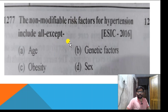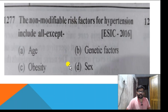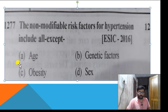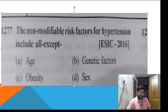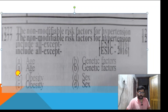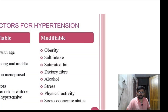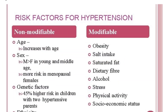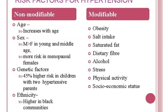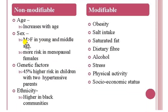Second question: the non-modifiable risk factors for hypertension — which is the odd one out? Options: age, genetic factors, obesity, sex. Obesity is not a non-modifiable risk factor — it can be changed. The non-modifiable risk factors are age, sex, and genetic factors.